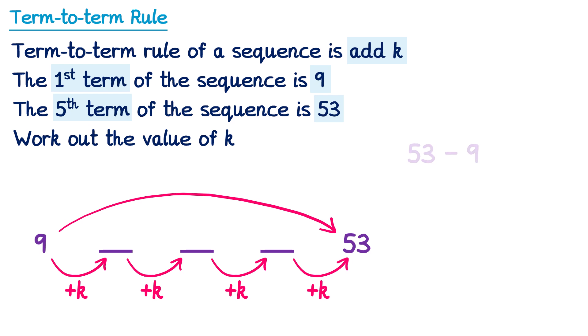To do this, I can do 53 subtract 9, which will give you 44. So to get from 9 to 53 in one big jump, I add 44. But we're not going to do it in one big jump, we're going to do it in four smaller jumps of k. So what we can do is divide that big jump of 44 into four smaller jumps. So if we divide 44 by 4, we get 11.